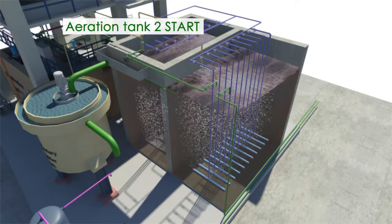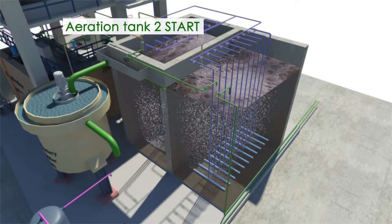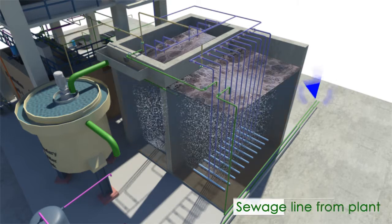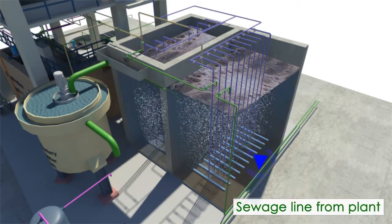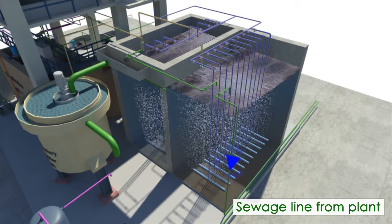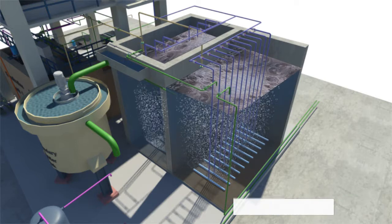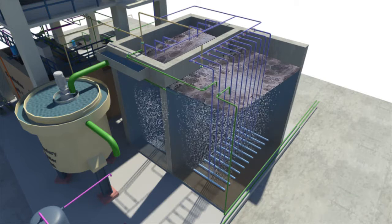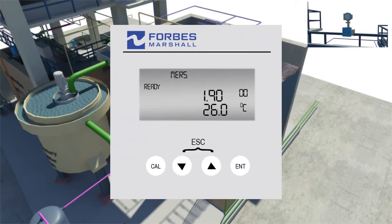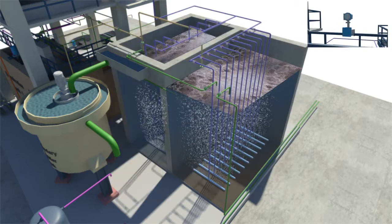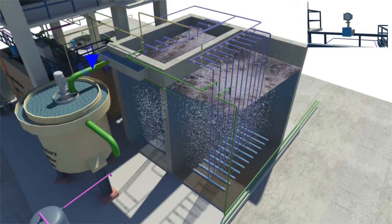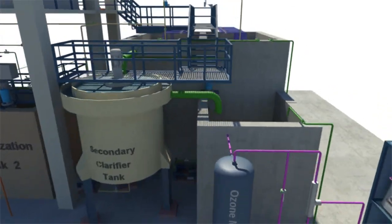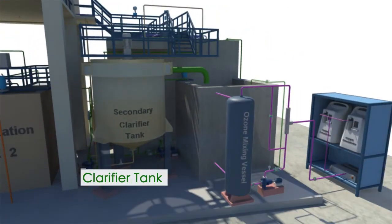The effluent then begins to flow into tank 2 and further to the secondary clarifier. The sludge recycle pump operates continuously in manual mode. A DO meter is provided to analyze the oxygen level in the aeration tank. The treated effluent from the secondary clarifier flows by gravity to the filter feed tank for further tertiary purification.